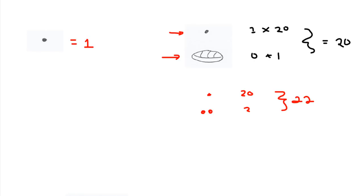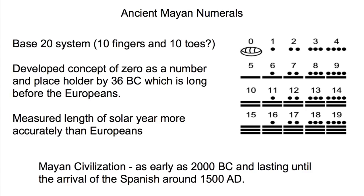The way in which the numbers work is the following. You have a symbol for zero, a single dot makes a one, two dots make two, three dots for three, four dots for four, and there's a single bar for five. A bar and one dot make six, a bar and two dots make seven. The bar represents five. When you get to ten, you've got two bars; two bars and a dot for eleven; two bars and two dots for twelve; three bars makes fifteen.